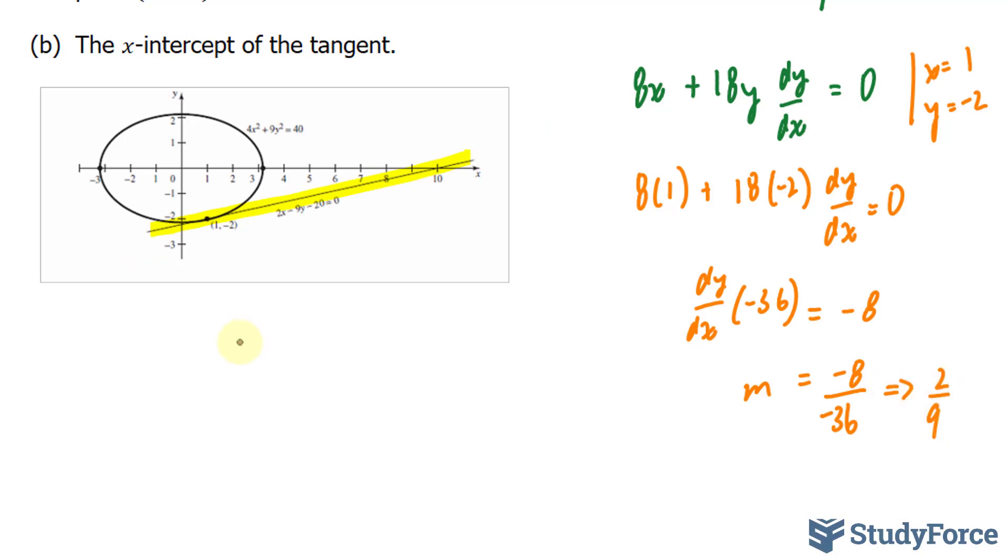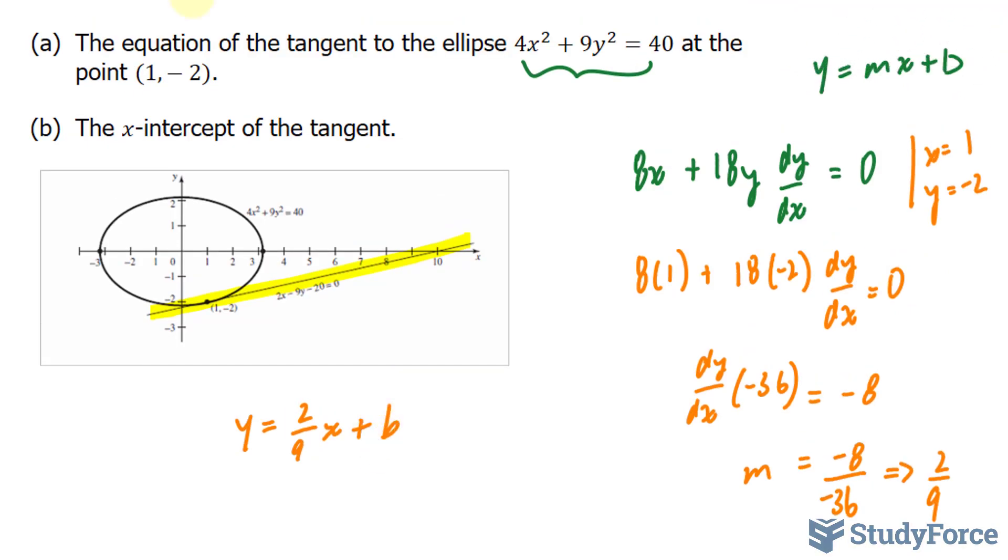I'm going to substitute 2 over 9 into y is equal to mx plus b, so 2 over 9x plus b. Now I need to find out what my b is by substituting 1 and negative 2 into x and y. That gives me negative 2 is equal to 2 over 9 times 1 plus b.